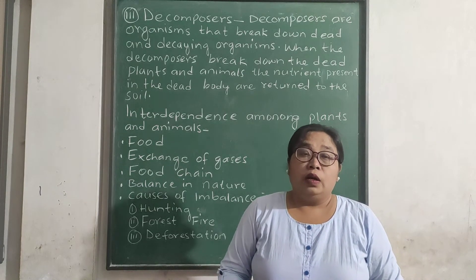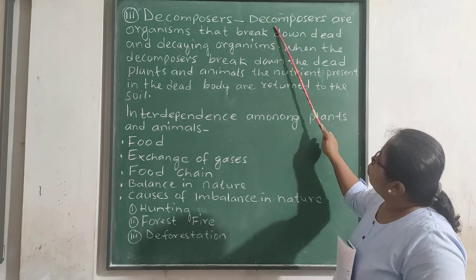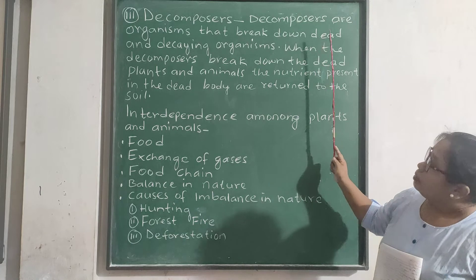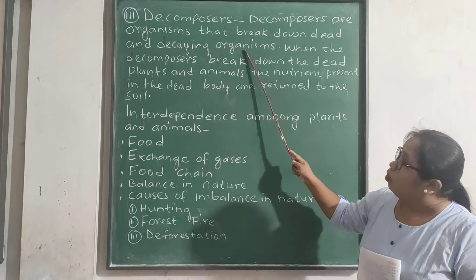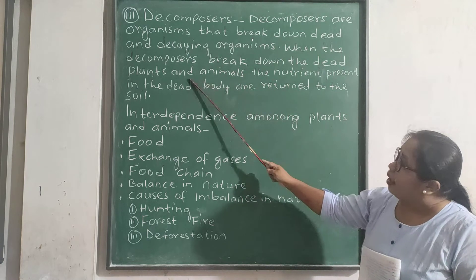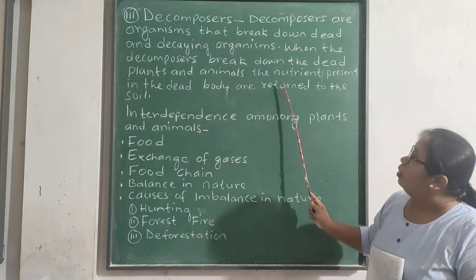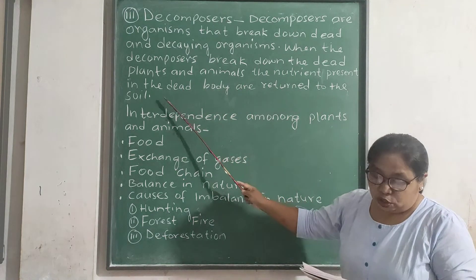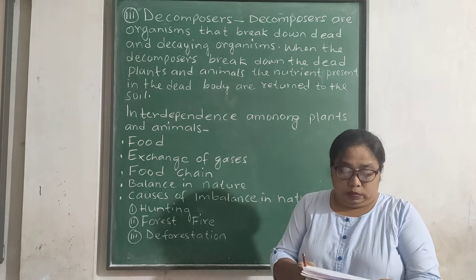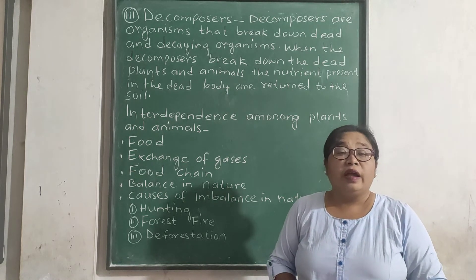Now let us discuss number 3: Decomposers. Decomposers are organisms that break down dead and decaying organisms. When the decomposers break down the dead plants and animals, the nutrients present in the dead body are returned to the soil. Examples of decomposers are bacteria and fungi.